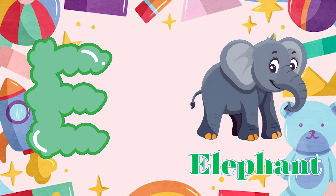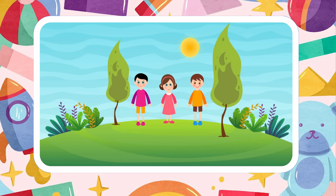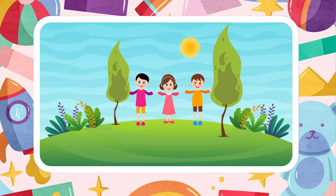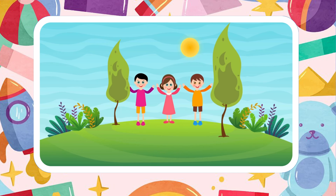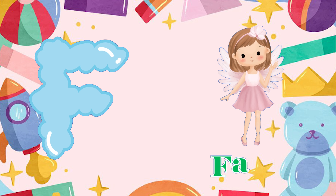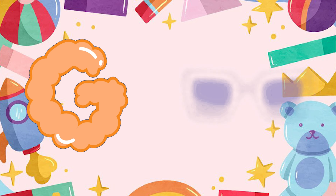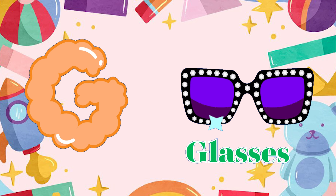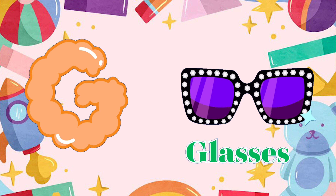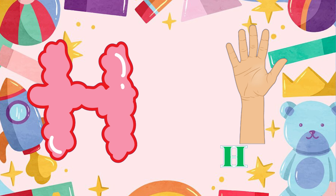E is for elephant. E-Elephant, E-Elephant. F is for fairy. F-Fairy. G is for glasses. G-Glasses.